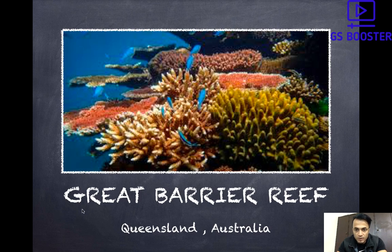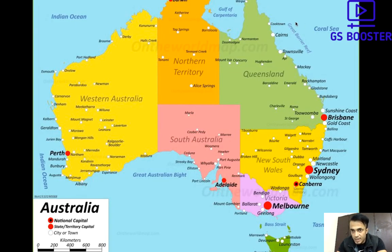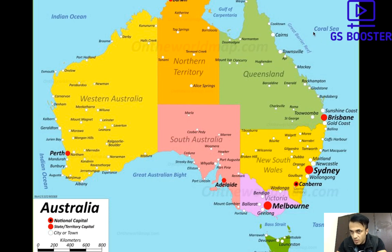This is a picture of the Great Barrier Reef, the largest coral reef in the world, located in Queensland province of Australia. This particular area is the Great Barrier Reef — it is slightly away from the seashore. If it were closer, it would be a fringing coral; because it's slightly further away, it is a barrier coral. The sea near this reef is called the Coral Sea.